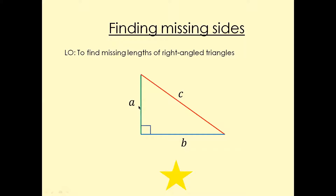Today we're going to apply Pythagoras to find the missing length in a right-angled triangle. In a right-angled triangle, one angle is going to be 90 degrees, which is a right angle. The longest side is going to be the hypotenuse, and then we've got one side that is the opposite side and one side that is the adjacent side. They are going to give you two sides and we have to find the missing side.